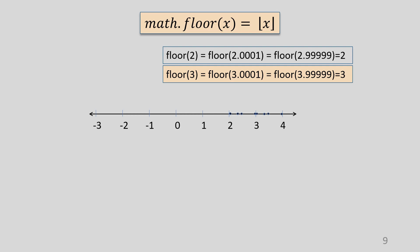Similarly, 3 is the floor of 3 to less than 4. In general, an integer is the floor of any number starting from itself till but not including its next integer. Or we can also say that an integer is the floor of all the numbers till but excluding the next integer to its right on the number line. This rule is applicable to all numbers, positive or negative.